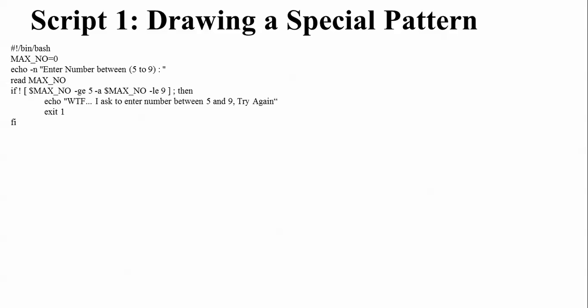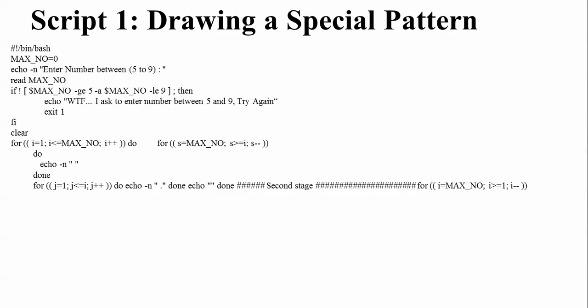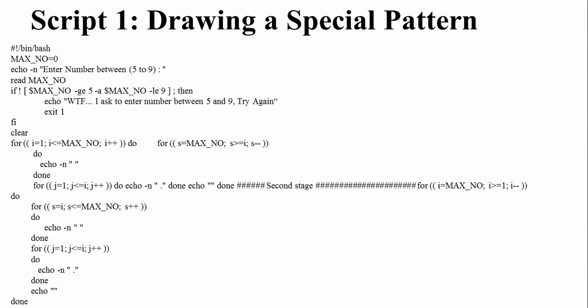After the if-else check, there's a 'for' loop with 'do', 'echo', and 'done' to draw the pattern. After writing this whole script we're going to check the drawing special pattern output completely. Let me now begin demonstrating the drawing of the special pattern.